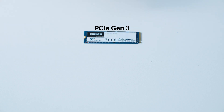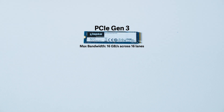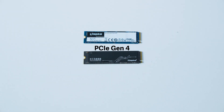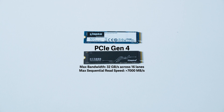PCIe Gen 3 has a max bandwidth of 16GB per second across 16 lanes and a max sequential read speed of 3,500MB per second on NVMe SSDs. PCIe Gen 4 has double the max bandwidth of Gen 3 — 32GB per second across 16 lanes — and a max sequential read speed over 7,000MB per second.